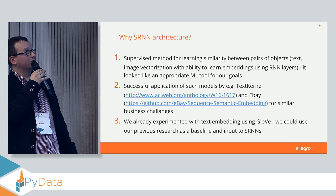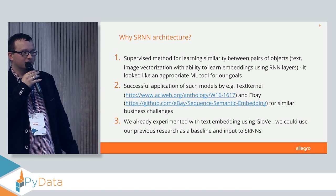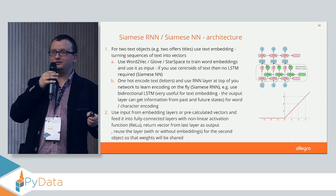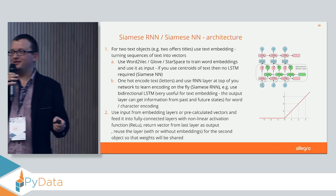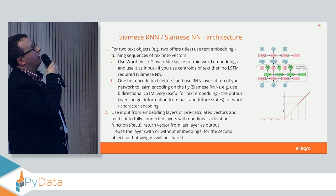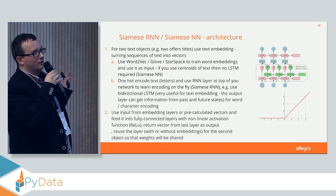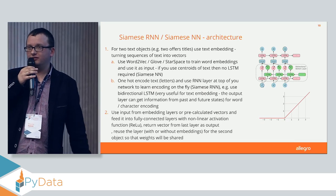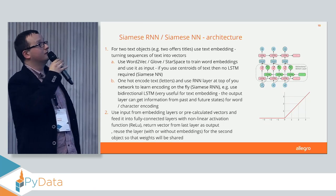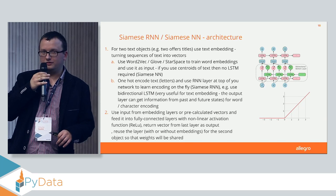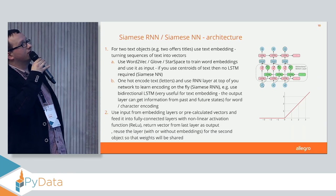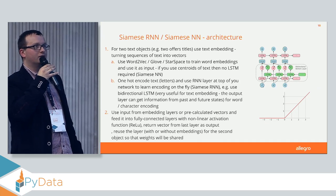For example, we used GloVe to find brands in offer titles with great results. For the Siamese architecture, you take two objects — you can embed your text using GloVe, Word2Vec, or Starspace, which is a newer method. Or you can one-hot encode them into vectors and use recurrent neural network layers like a bi-directional layer to encode these vectors, training them with the whole network.